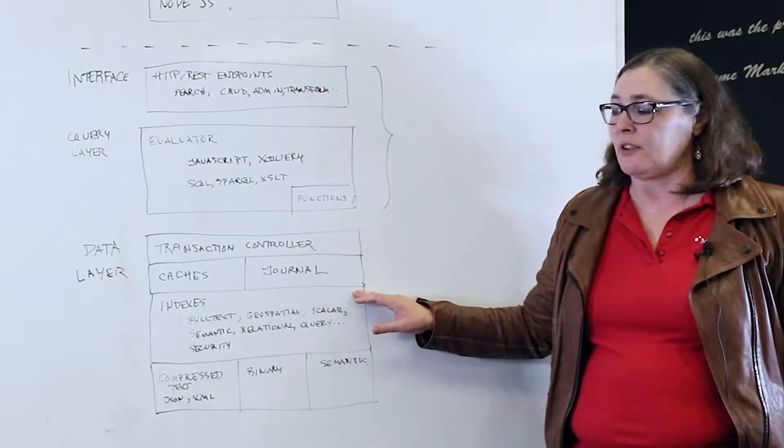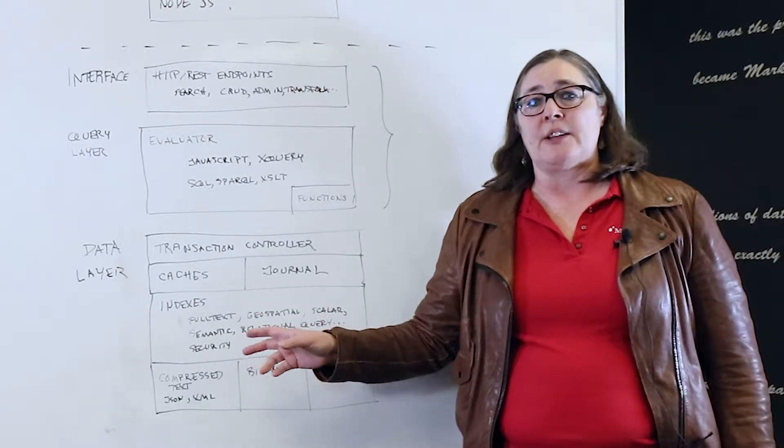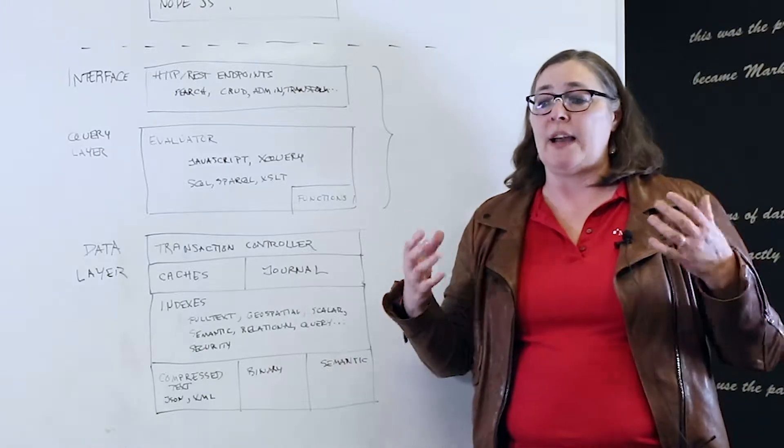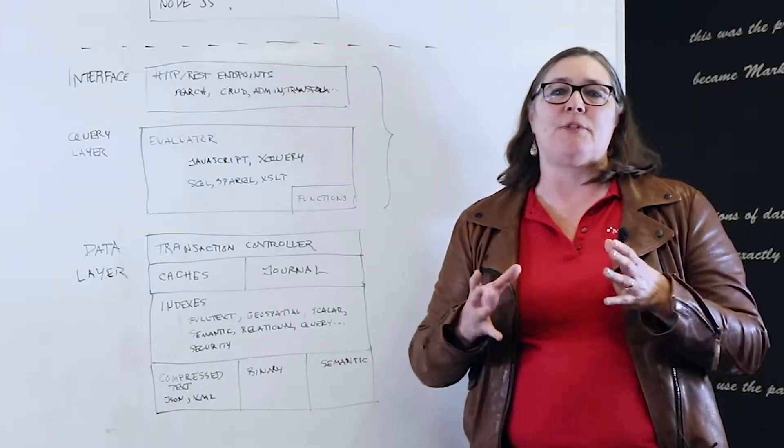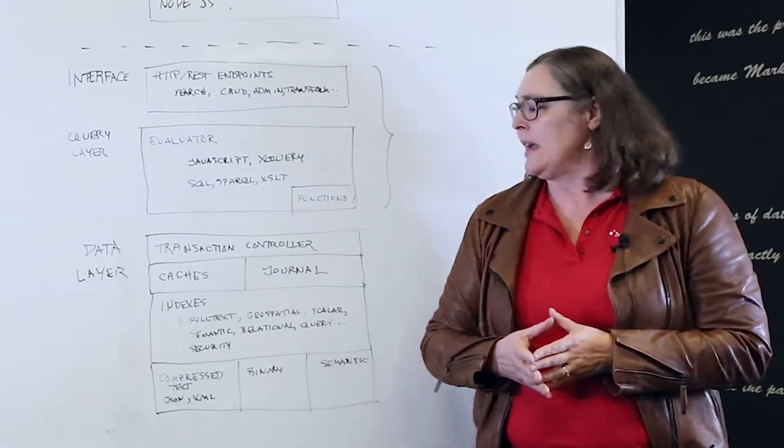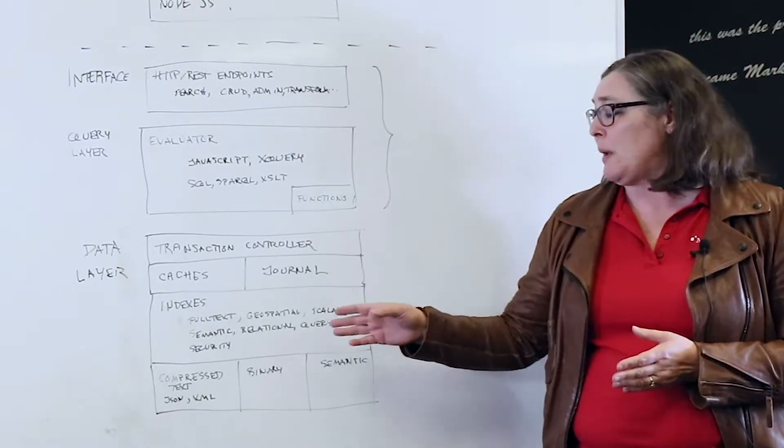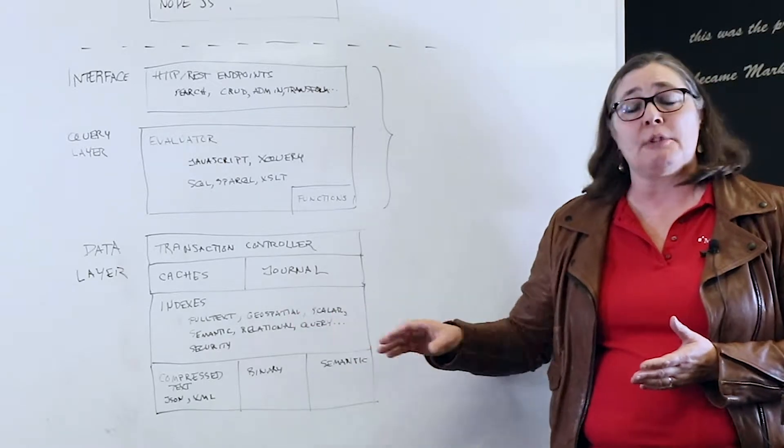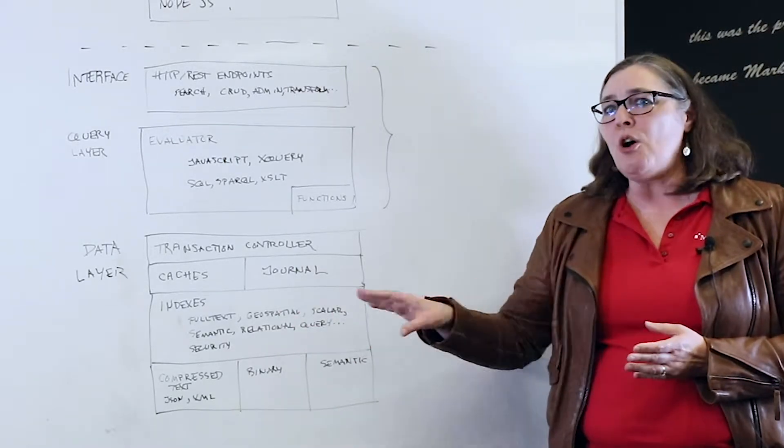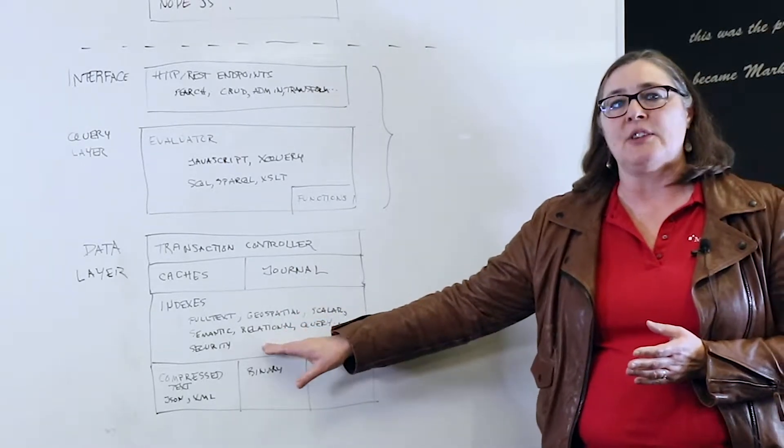On top of that, we have an extensive set of indexes. There's the main full-text index, of course, although we call it the universal index because it provides much more than just words. But then there's specialized indexes for more specialized forms of data: geospatial, scalar, semantic, relational, and so on. There's also the security index at this level.